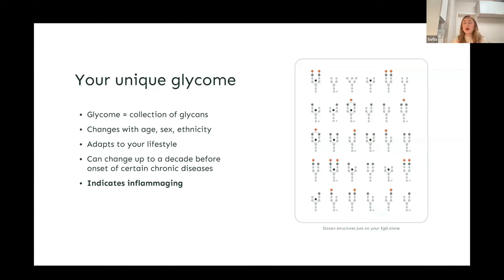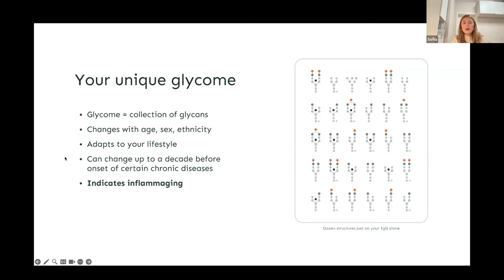Many different factors affect the glycans on our proteins: age, sex, ethnicity, lifestyle, and chronic diseases. This is what we describe as the theory of inflammaging, which says that as we age our chronic inflammation levels go up, and glycans follow this. The good news is that glycans can be changed — they follow your different lifestyle choices and chronic diseases — and changes can be seen in three to six months after starting an intervention.